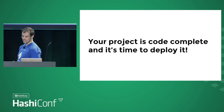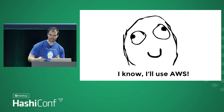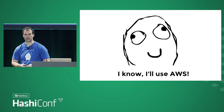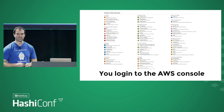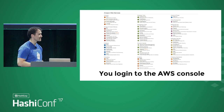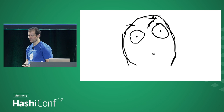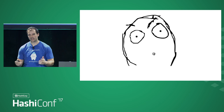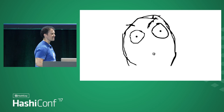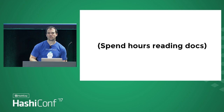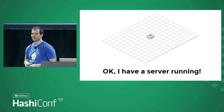So you think to yourself, okay, I'm going to use AWS. It's popular, everyone seems to be doing it. Great. So you log into the AWS console for your first time and you see a screen that looks something like that, which is a little terrifying. And you probably feel a little bit like that. So you spend a few hours reading documentation, browsing Stack Overflow. Eventually you get things more or less sorted out and you got a single server up and running.